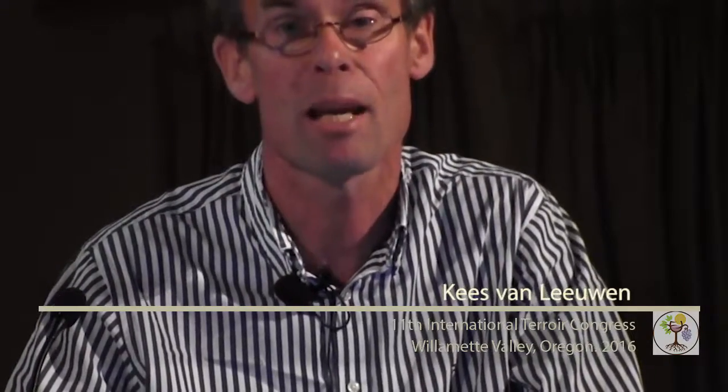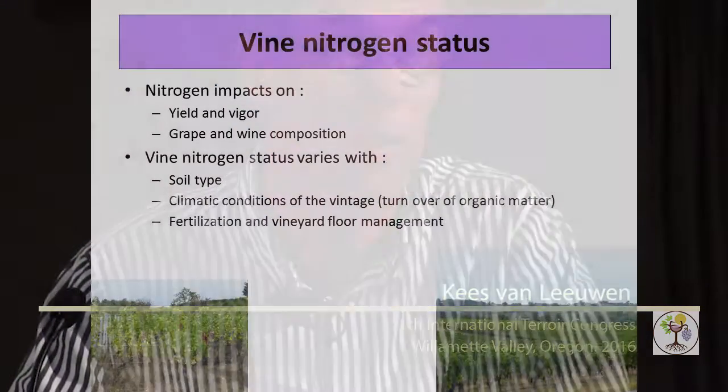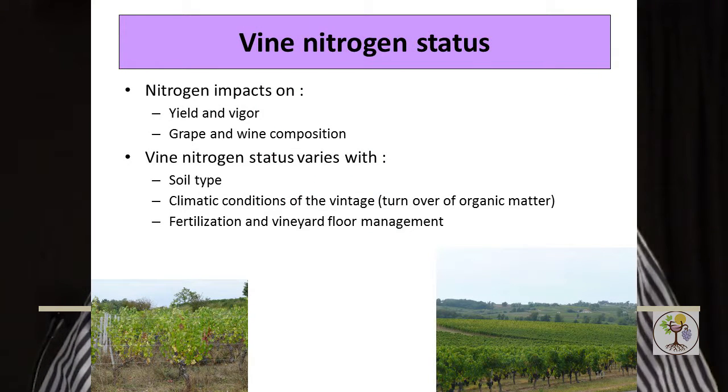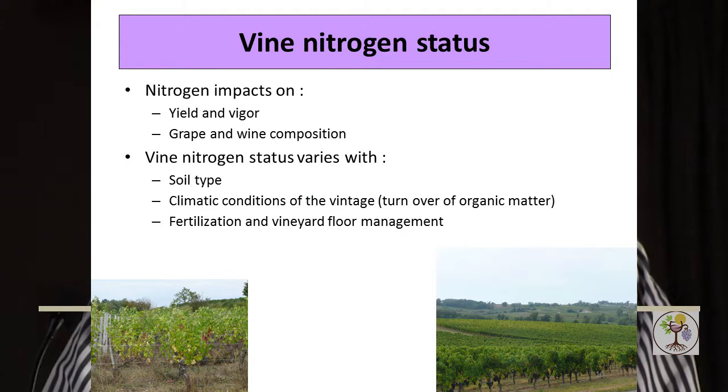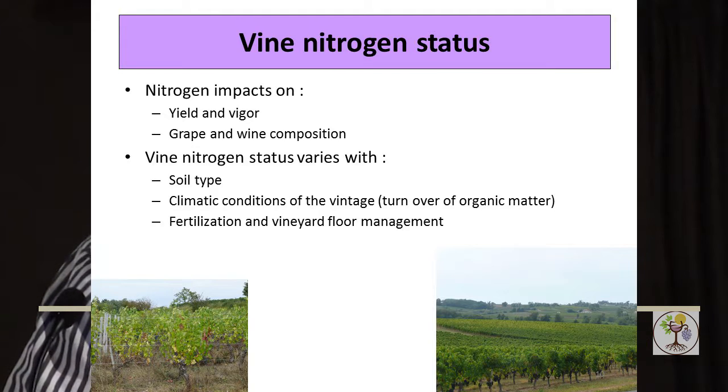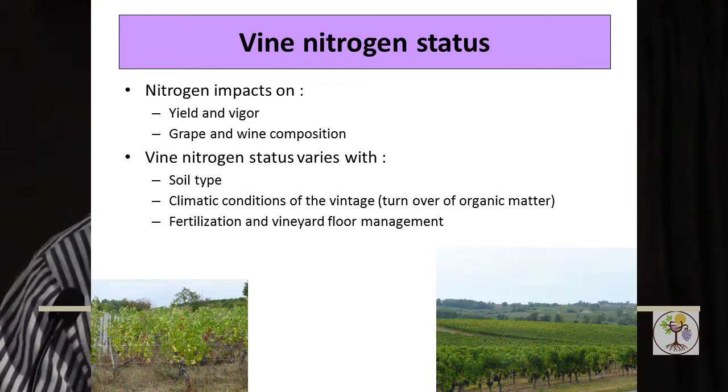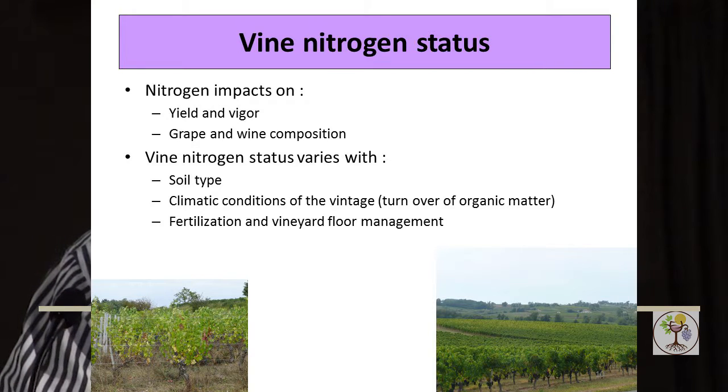The vines pick up nutrients from the soil, and among all the nutrients it's clear that nitrogen has the biggest impact on vine growth, vine vigor, yield, and grape composition. Vine nitrogen varies with soil type depending on the amount of organic material and also the turnover of the organic material. Climate has some impact on that turnover, and from one year to the other, the availability of nitrogen can differ.